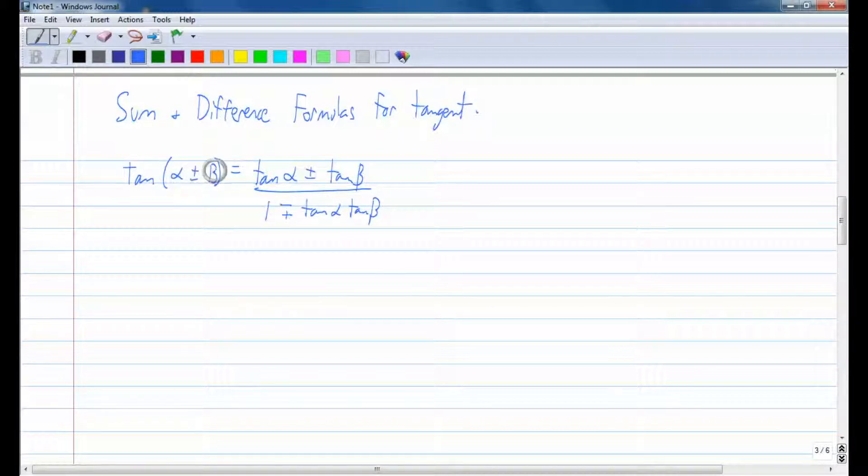So if we do a sum for tangent, we have a plus here. We want to make sure there's a plus in the numerator and a minus in the denominator. If you do a difference for tangent, then you want to make sure there's a minus in the numerator and a plus in the denominator.